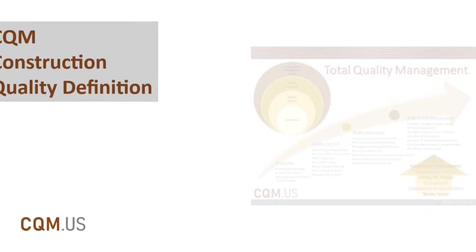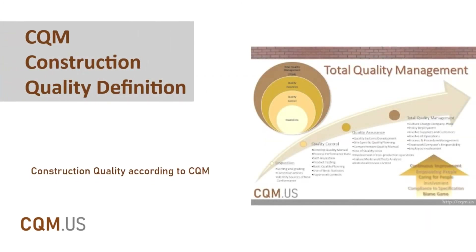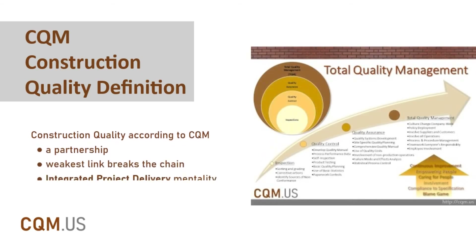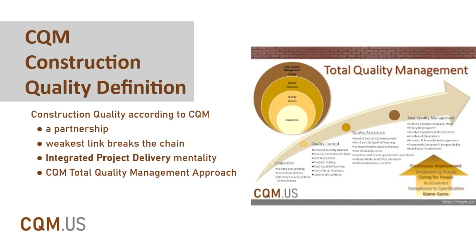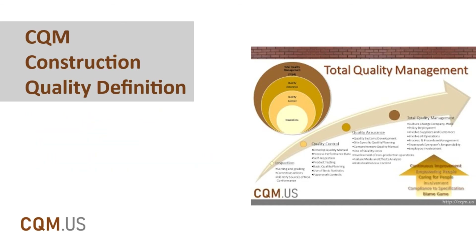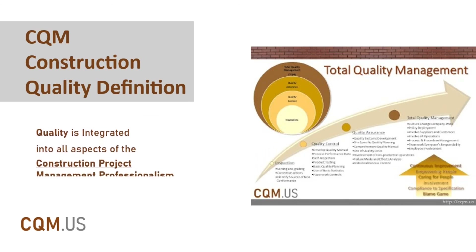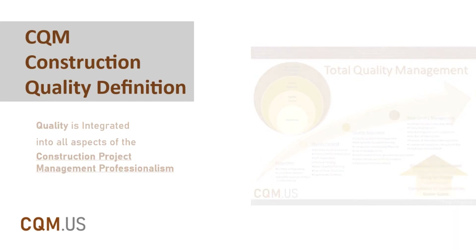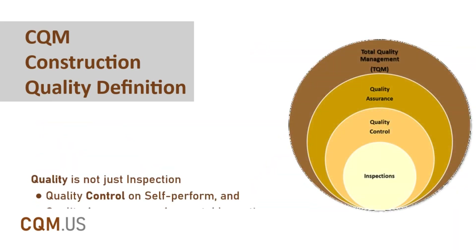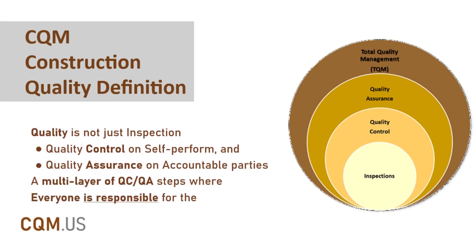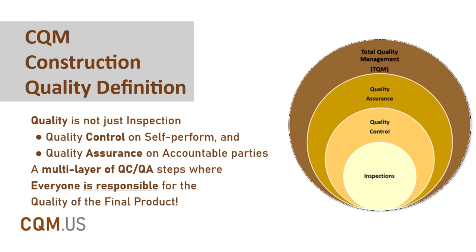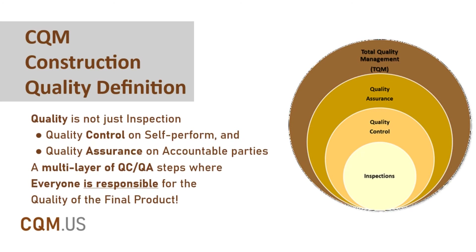The CQM construction quality definition will encompass all perspectives in a partnership setting where the weakest link breaks the chain for the entire construction project. The integrated project delivery mentality is based in the CQM total quality management approach, where quality is integrated into all aspects of construction project management professionalism. In CQM, quality is not just inspection and quality control on self-performing contractors, but a multi-layer of CQCA steps where subcontractors are assuring suppliers' quality control, the prime contractor is assuring subcontractors' quality control, third-party testing is assuring the prime contractor's quality control, and the owner's representatives are assuring everyone's final quality controlled product and services.